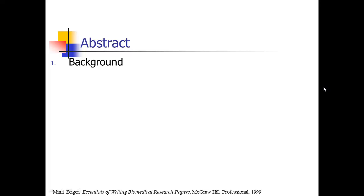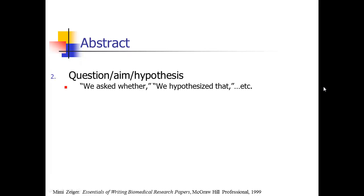Mimi Zeiger, in her book I've mentioned before, has a nice little summary of what should go in the abstract. It's essentially just pulling out little bits from all the rest of your paper. It's good to have a one-sentence statement of some background, just to give a little bit of context — because if somebody's jumping into your abstract, you have to ground them in what the research question is and why it's important.